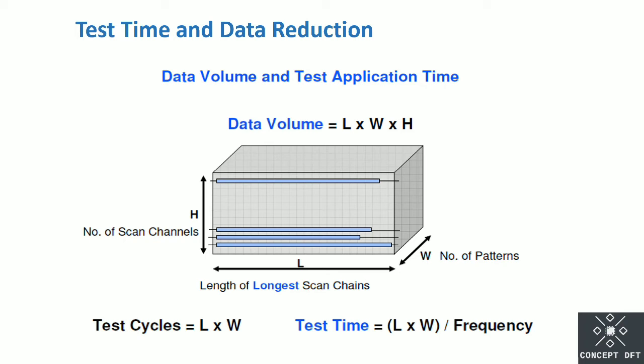Once we reduce the scan chain length L, we get less data volume as well as fewer test cycles. The formula for test time is: Test Time = (L × W) / frequency. Again L is present, so once we reduce the longest scan chain length, we get improvement in data volume reduction, test cycle reduction, and we save our test time.